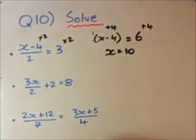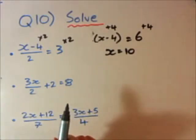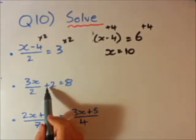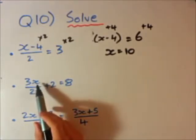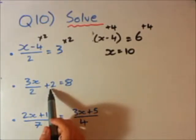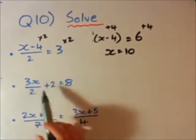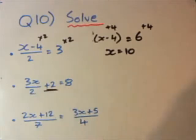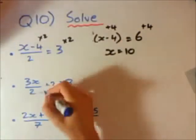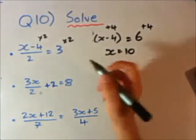Now I'm going to add 4 to the left and add 4 to the right to get rid of this minus 4. So x minus 4 plus 4 is x, 6 plus 4 is 10. So there's the answer to the first one. Let's look at the second one now.